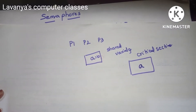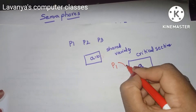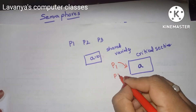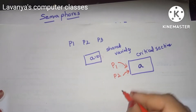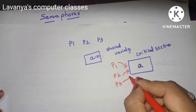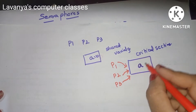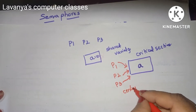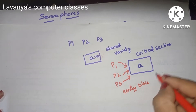When P1 requires that variable, P1 enters the critical section. P2 and P3 also need the same variable and also enter the critical section. That is why, before entering the critical section, we need two types of blocks: one is the entry block section.